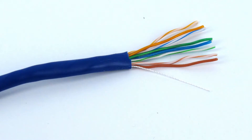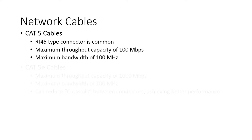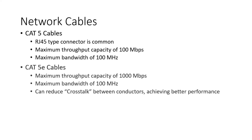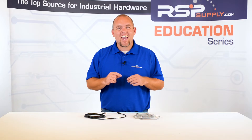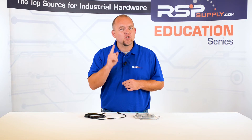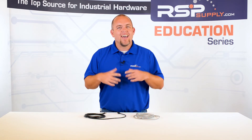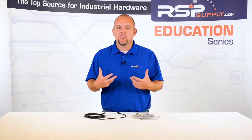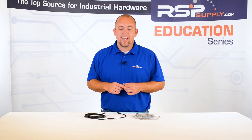CAT5E network cables' main difference from the standard CAT5 cable is the increased speed capacity through the cable. It can handle a throughput of up to 1000 Mbps, or 1 Gbps. CAT5E will also reduce the crosstalk between the different pairs of wires within the cable, therefore offering better performance. CAT5E is currently the most commonly sold network cable today, and it's most likely what you are seeing being used in most of your existing networks.